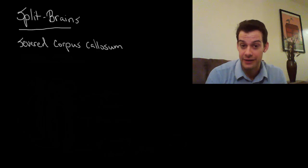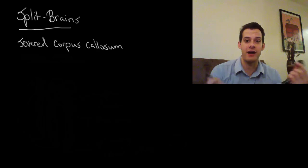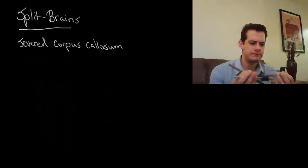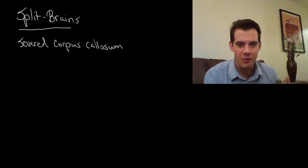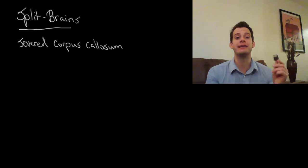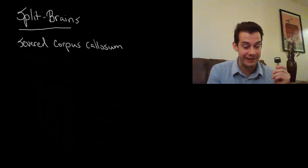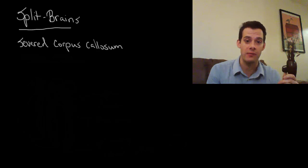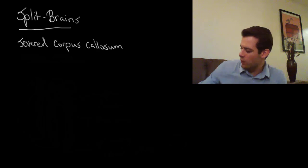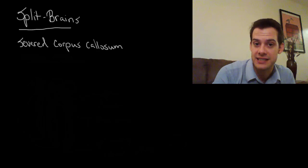So how do we know that the right hemisphere even knows it? You might say, well, maybe they just really don't know. Well, if I put a bunch of objects in front of them, and I say, okay, using your left hand, point to the one that you were holding, and they can immediately point to the key. So this shows that the right hemisphere does know it, it's just not able to talk about it. So that's one way we can reveal this specialization in the brain.